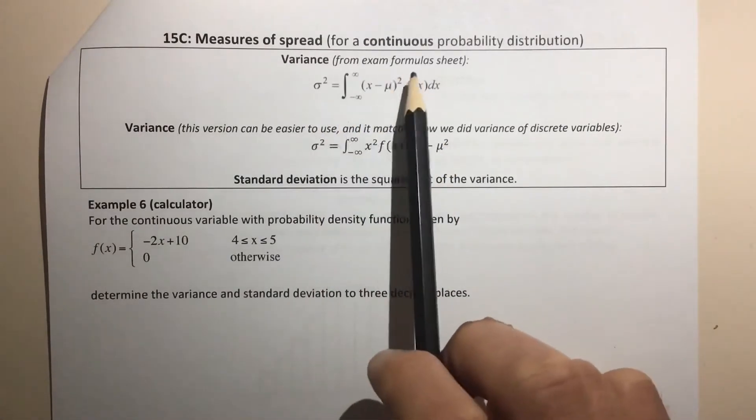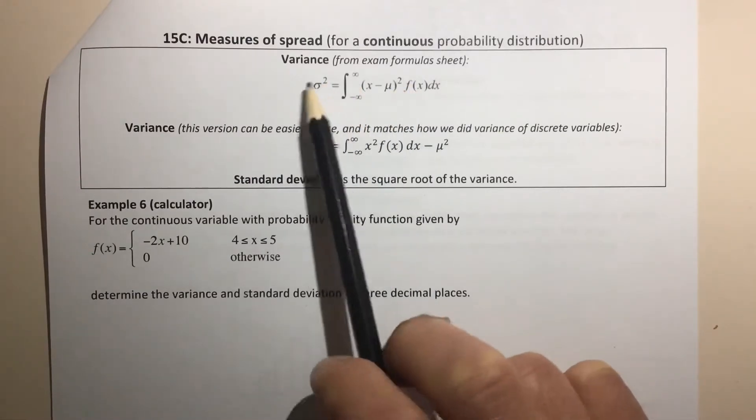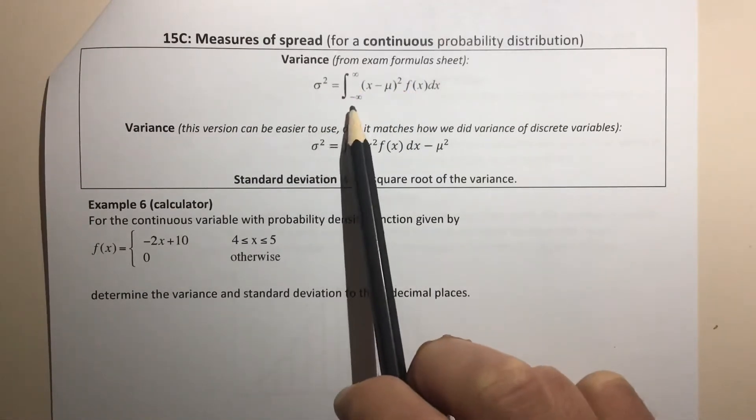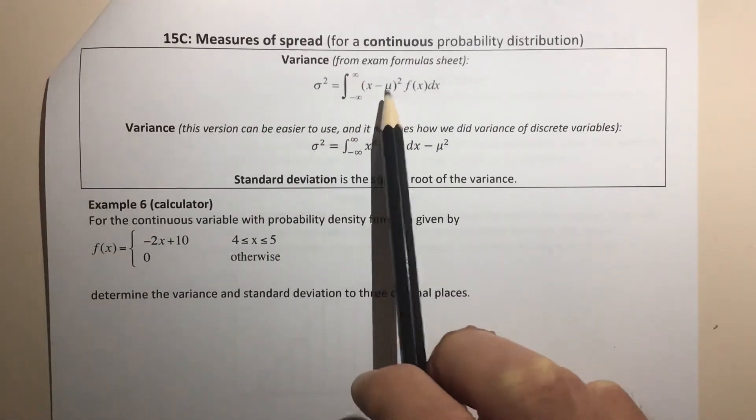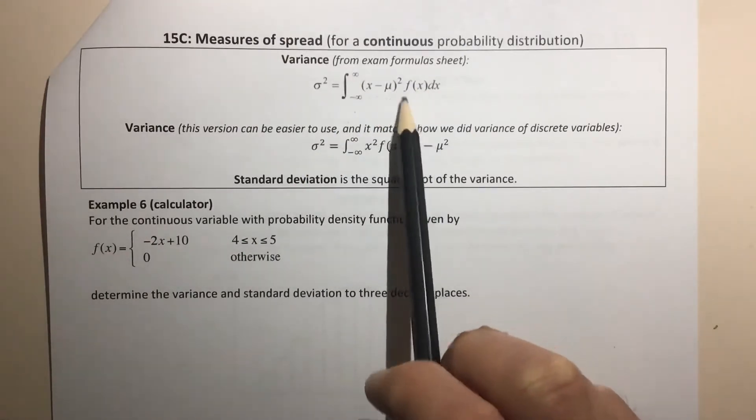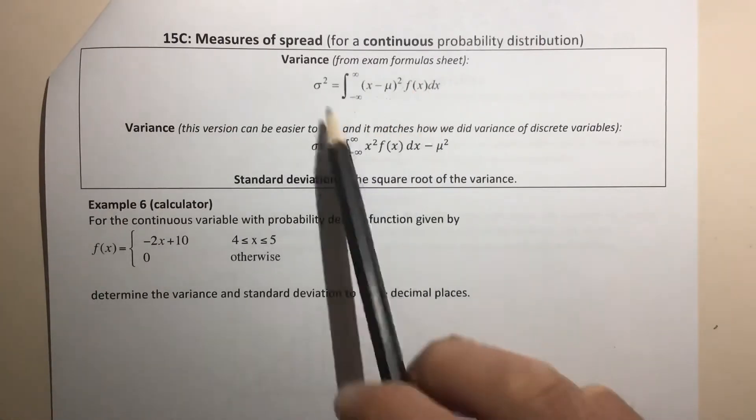The one that's on the formula sheet, on the VCAR exam formula sheet, is the variance, so σ², the variance equals the integral from negative infinity to infinity of (x - μ)² times the function f(x). So that's the first way to find the variance.